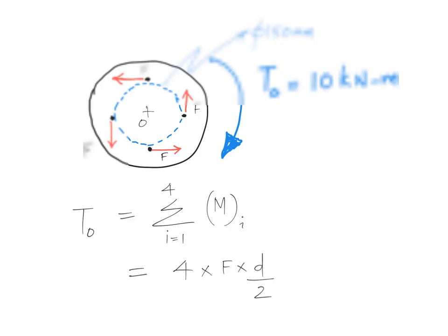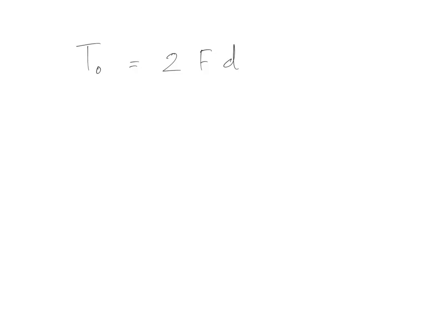Continuing with the mathematical equation, we have T₀ = 2Fd. Keep in mind that this particular d is not the diameter of the bolt, it is the pitch circle diameter.